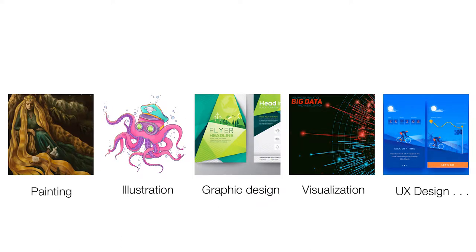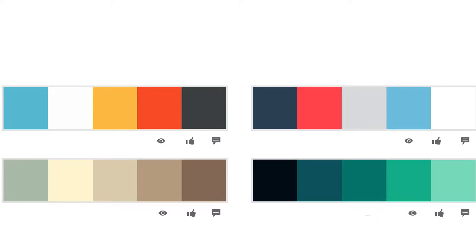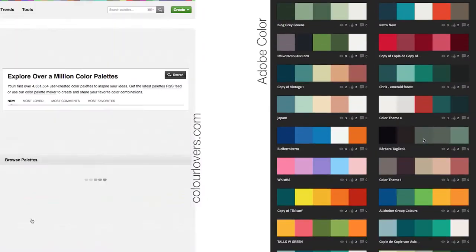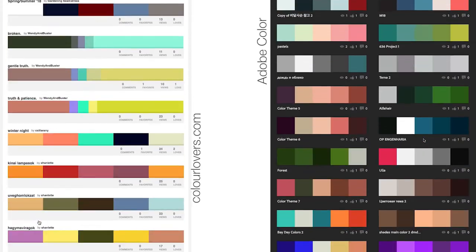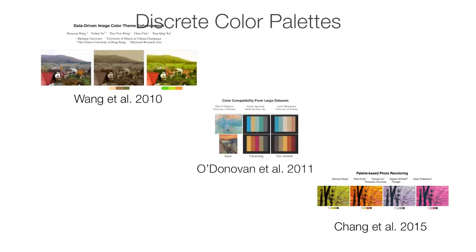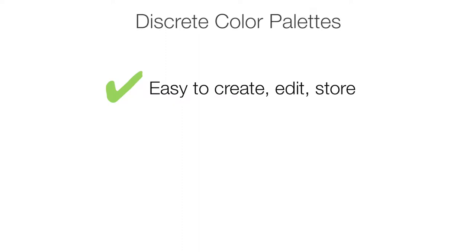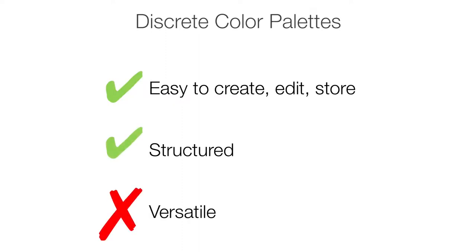Color is an essential element of any design. To organize colors, artists often use discrete color palettes. Thousands of such palettes are actively shared and rated online on multiple websites. Discrete color palettes are also a popular representation in research. Their popularity is not surprising, given that they are easy to create, edit, and store, and well-structured for data-driven analysis. However, they are a poor man's approximation for actual color distributions in most art and design.